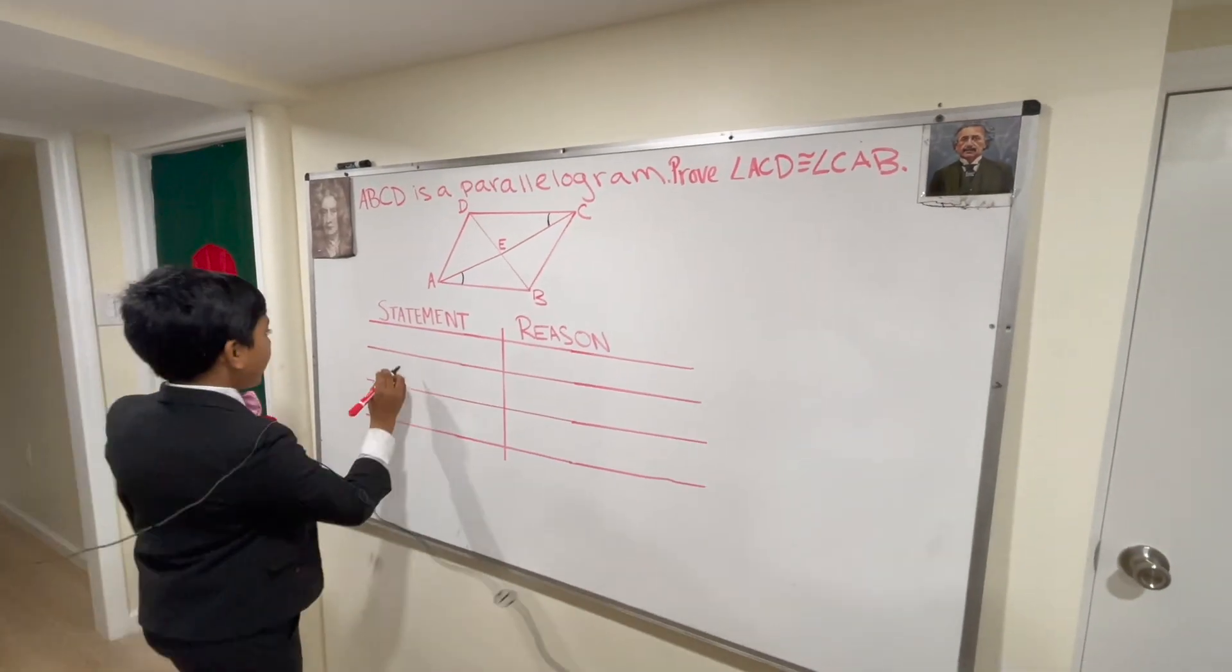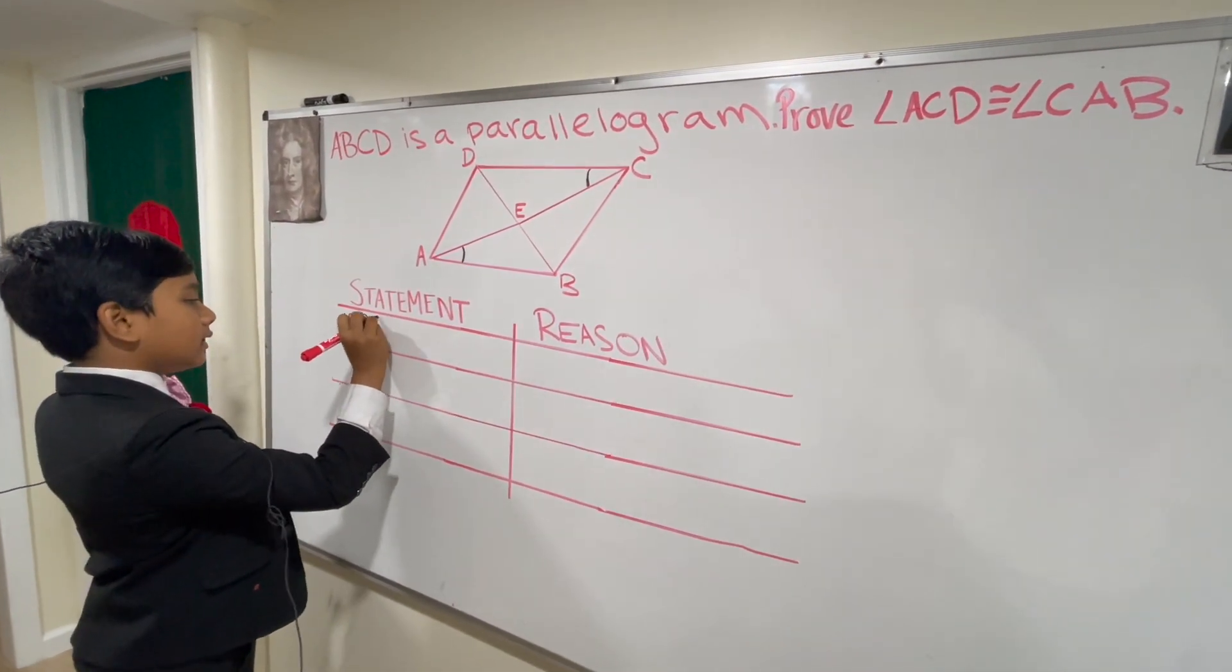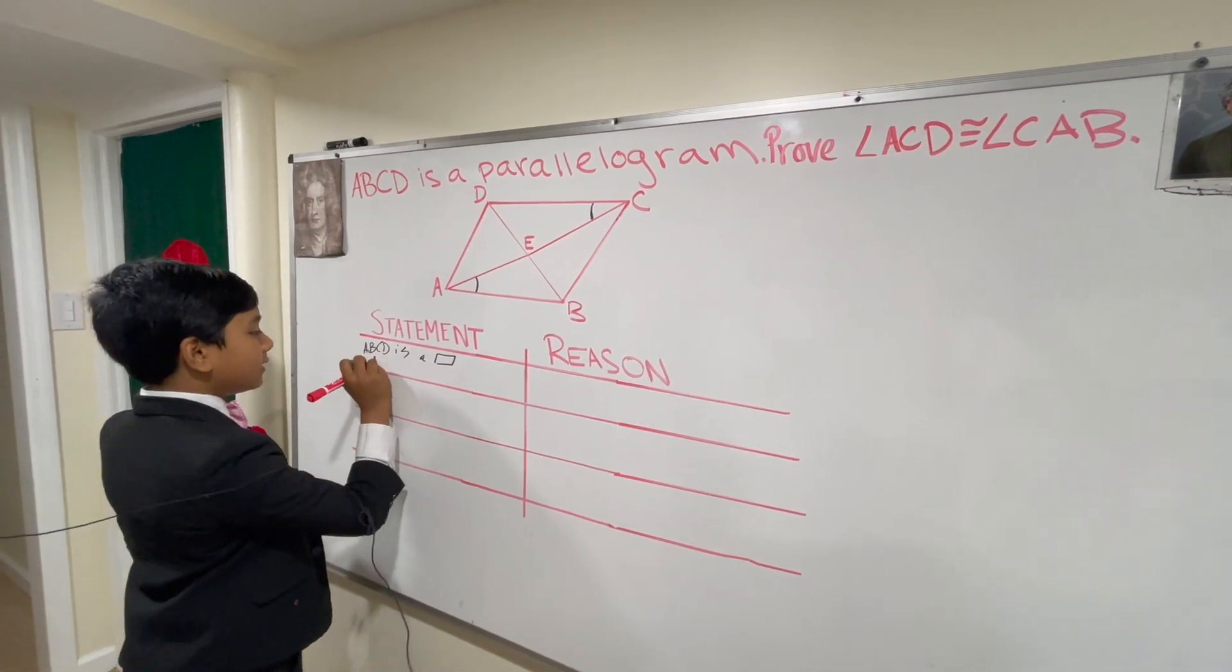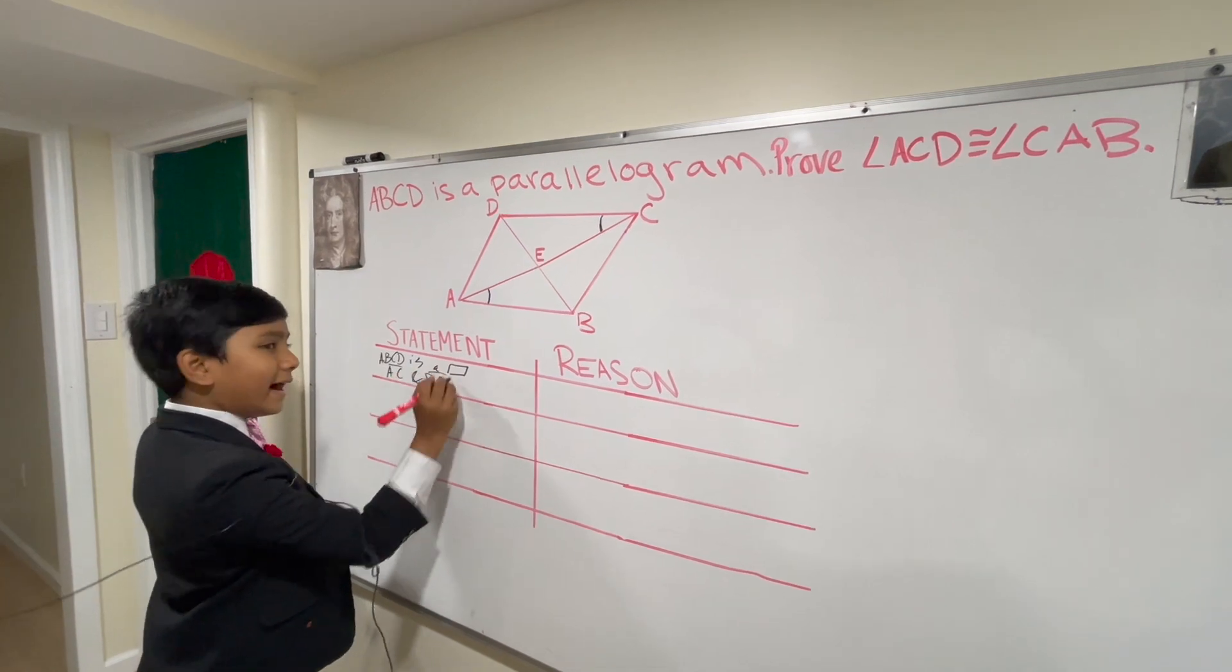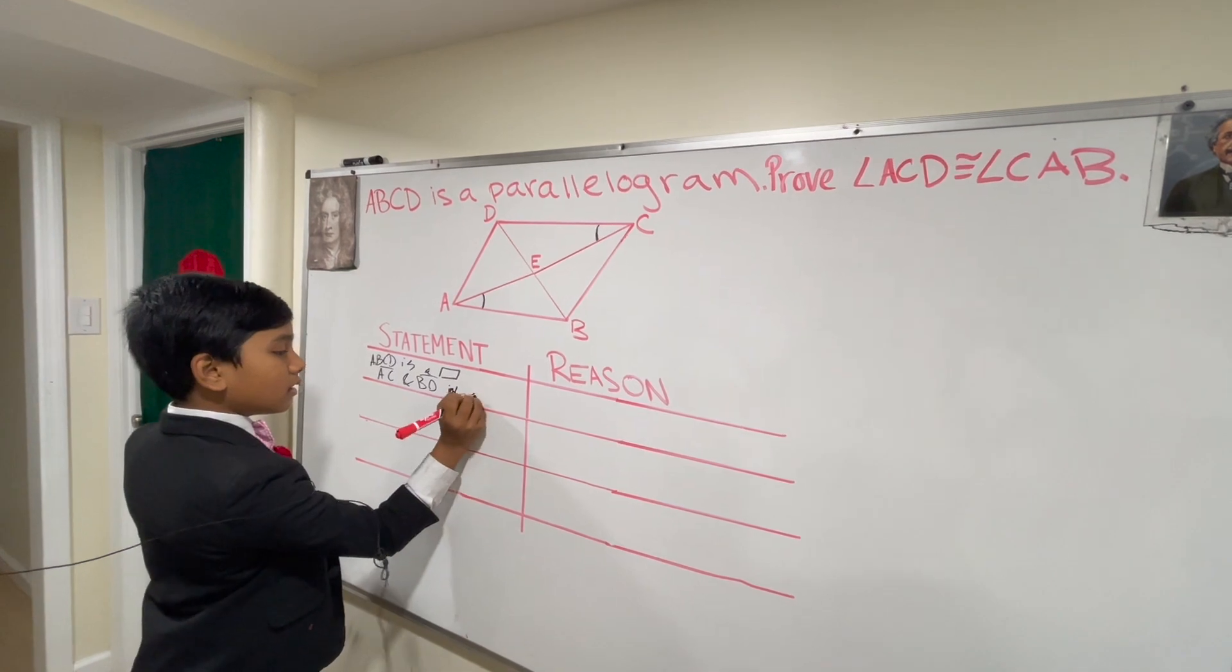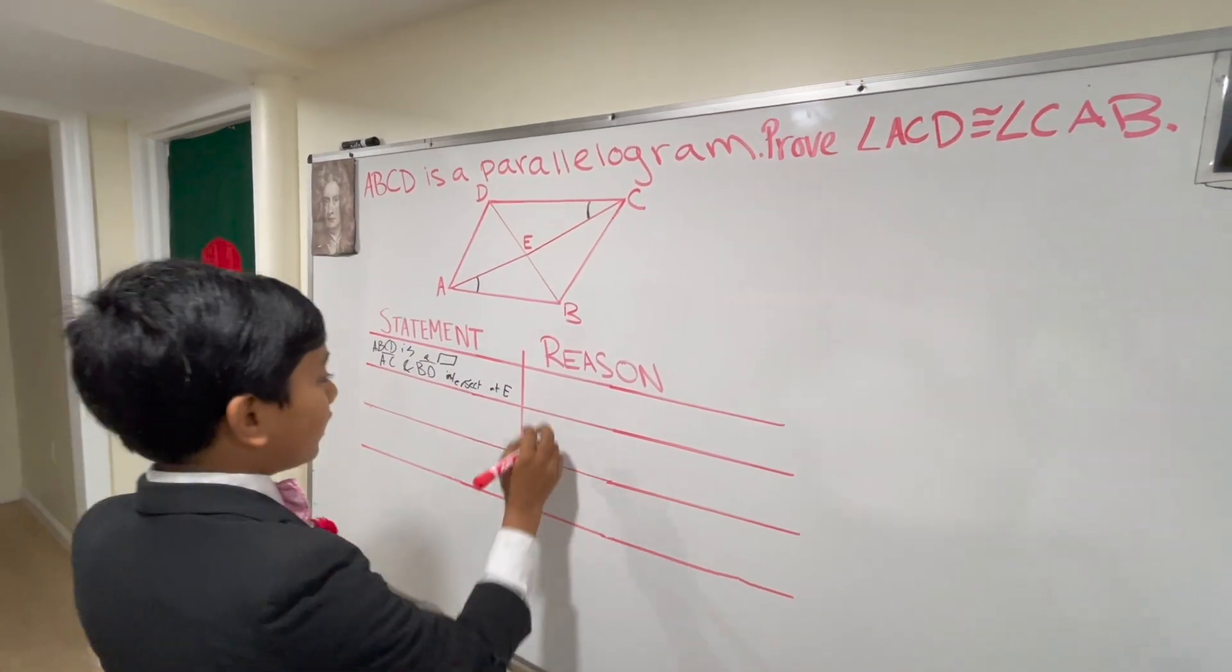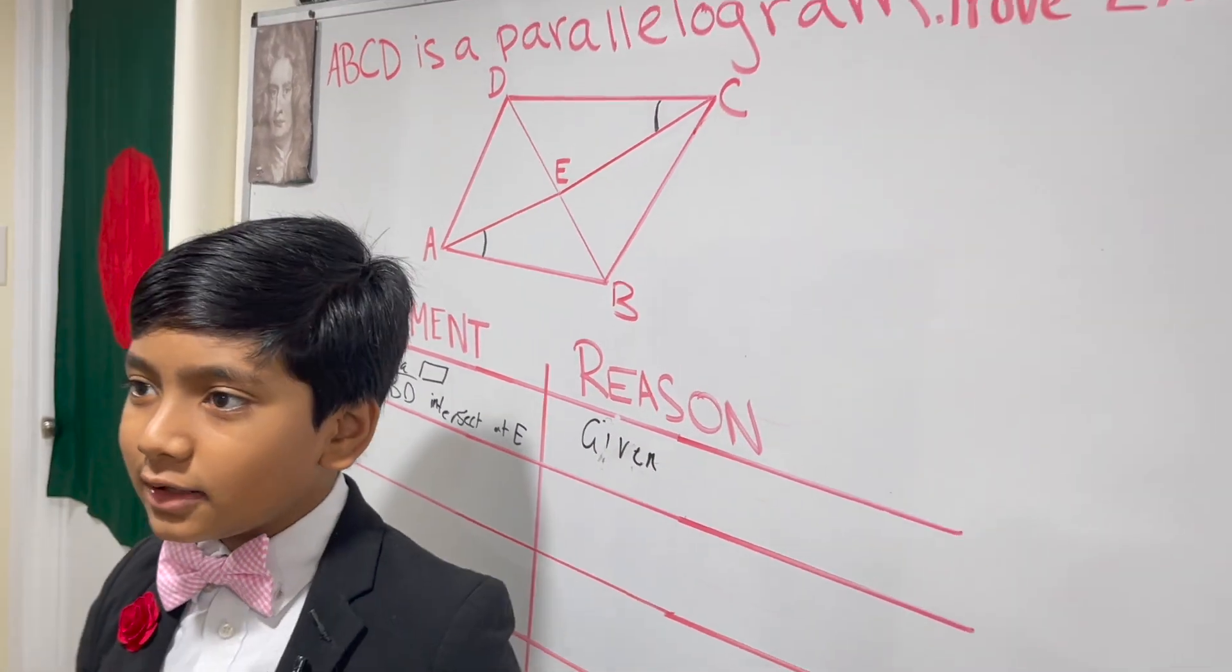First, let's write down everything they gave. ABCD is a parallelogram, and AC and DB intersect at E. So what is the reason for this? Well, it's given.